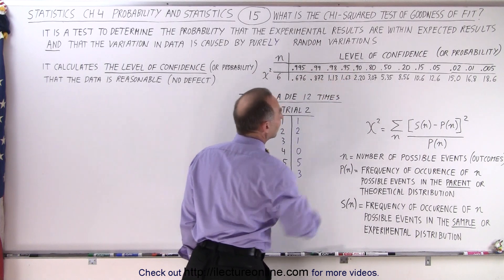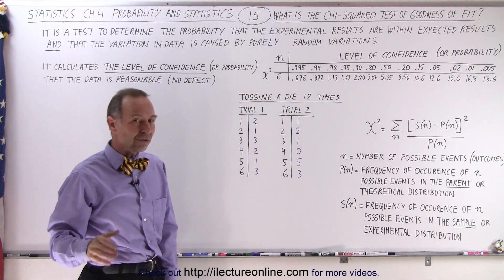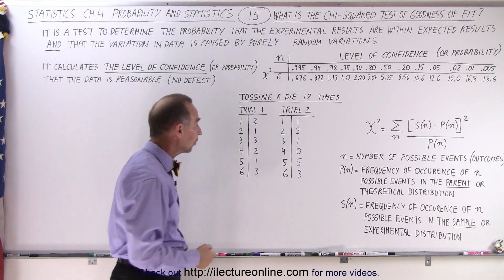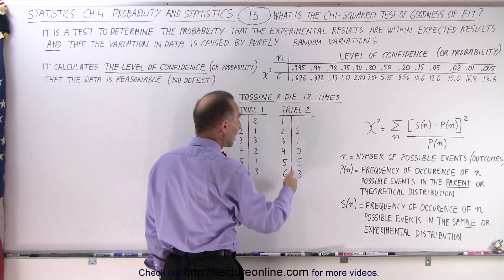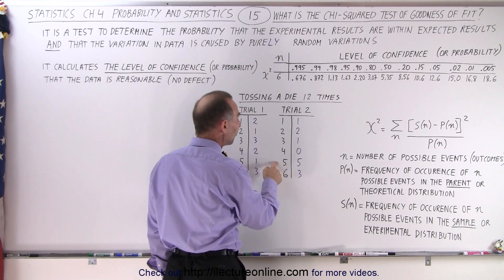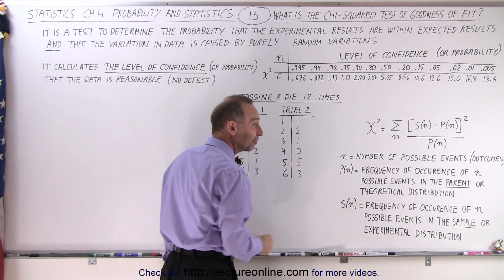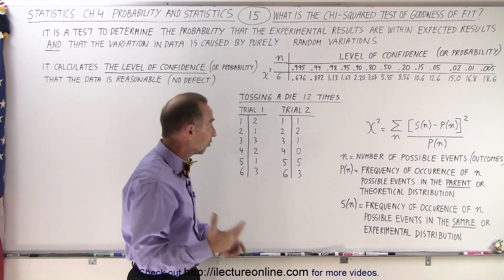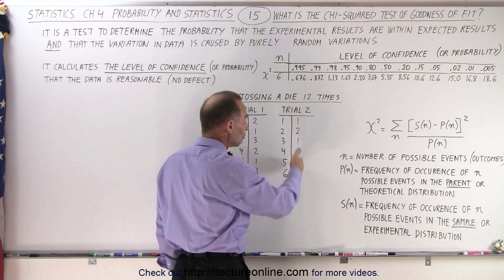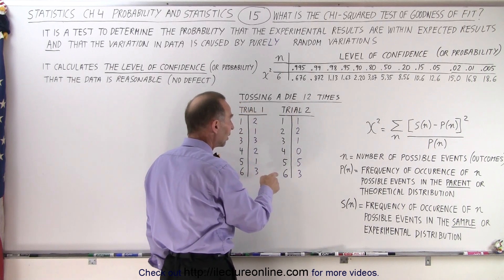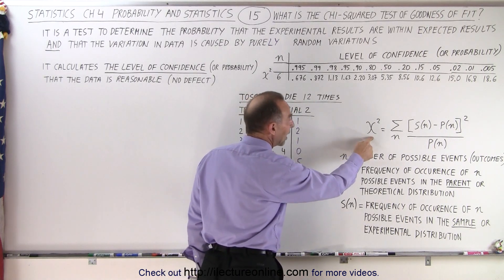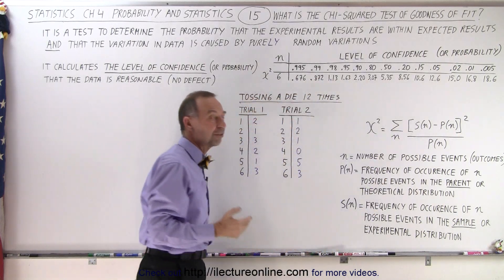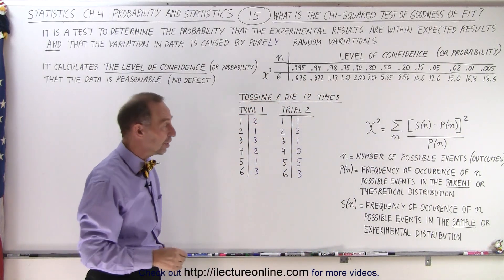Now I have to do a second trial with a different die. Notice I get very different results. I have much more variation. In the case of the number 5, it appeared 5 out of 12 times. That's almost 50% of the time. That's a very unusual situation. And I can see that there's much more variation in this trial than there was in this trial. I would expect a much greater chi square value, and therefore it pushed me into a much lower level of confidence that I was dealing with a good die.